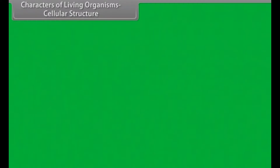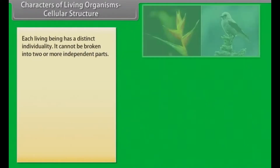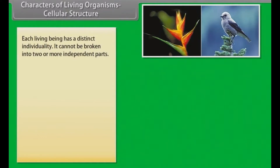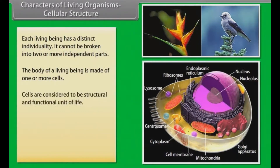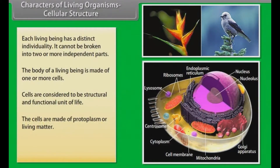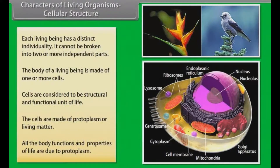Each living being has a distinct individuality. The body of a living being is made of one or more cells. Cells are considered to be the structural and functional unit of life. The cells are made of protoplasm, or living matter. All the body functions and properties of life are due to protoplasm.